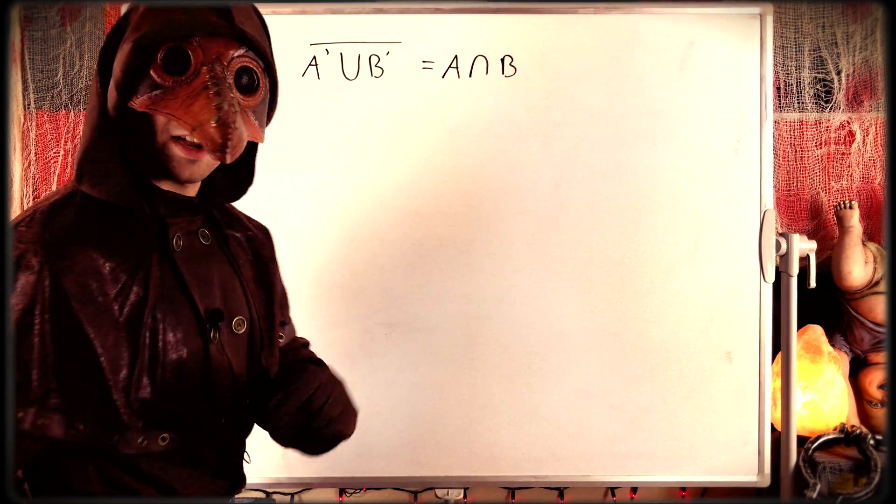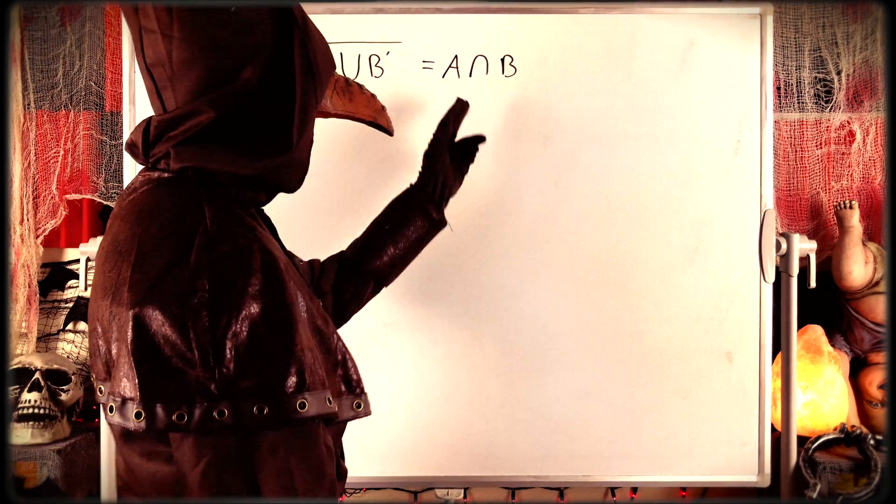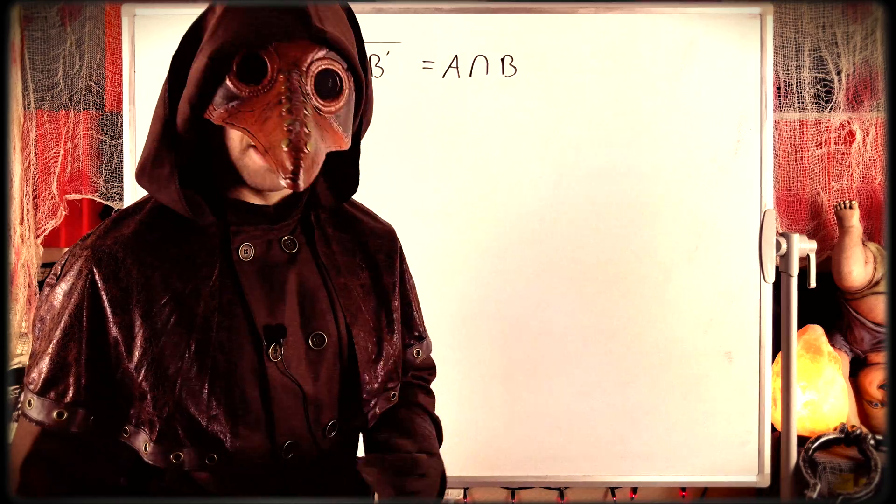So we see it works out pretty slick. The complement of A complement union B complement is just the intersection of the sets A and B.